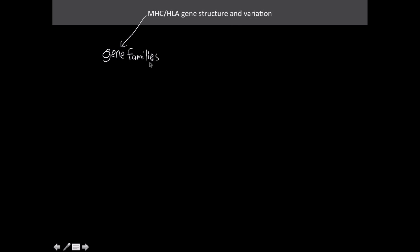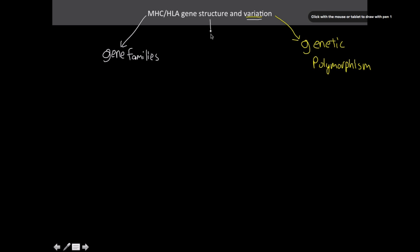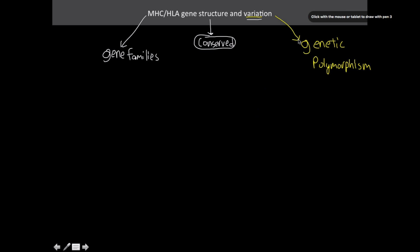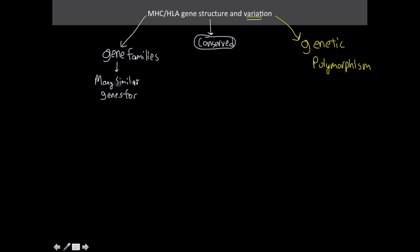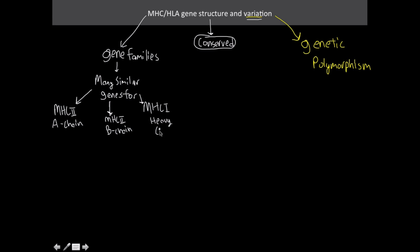Gene structure and variation come from gene families and genetic polymorphism. These genes are conserved — the structure doesn't change much and there's not a lot of recombination between them. The advantage is that we have a huge number of genes to choose from for our MHCs. Gene families include MHC class 2 alpha and beta chains and MHC class 1 heavy chain (alpha 1, 2, and 3).